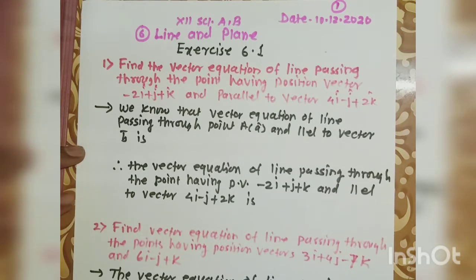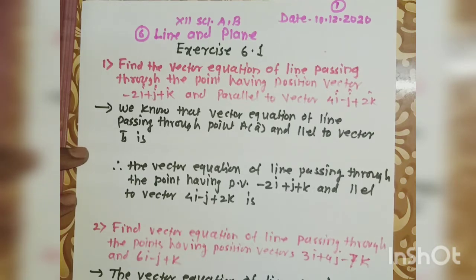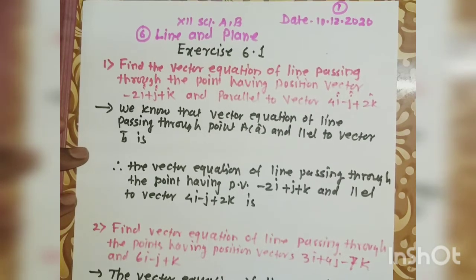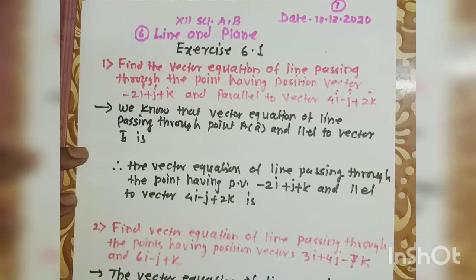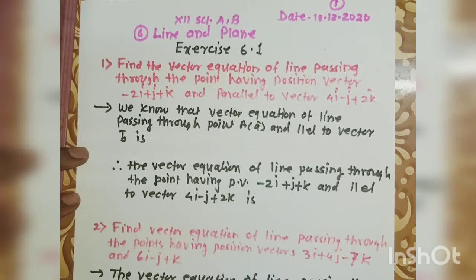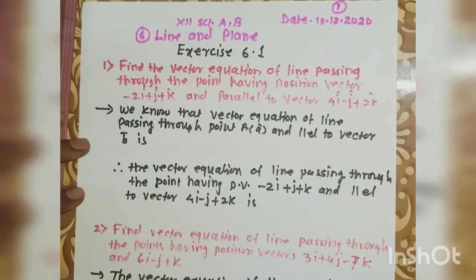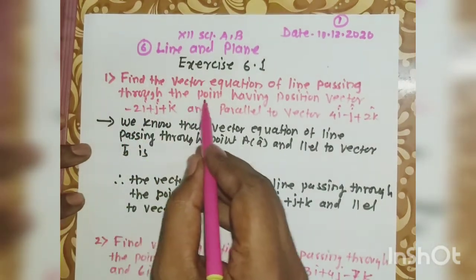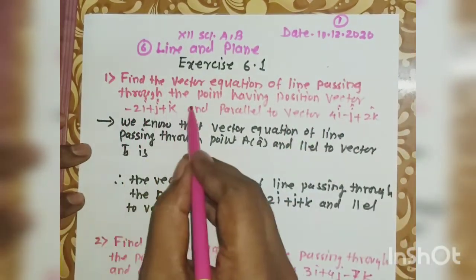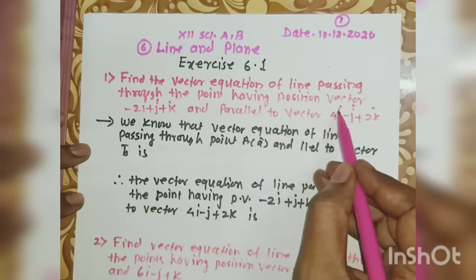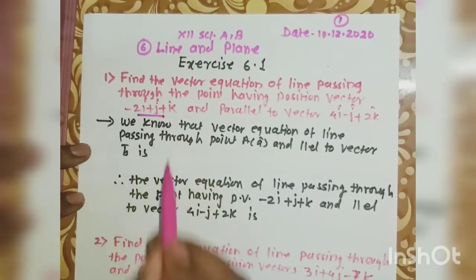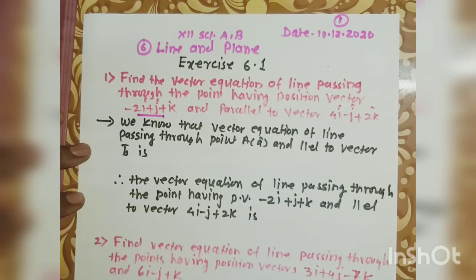The first type is the equation of a line passing through one point and parallel to one vector. In exercise 6.1, the first example is: find the vector equation of a line passing through a point having position vector 2i plus j plus k and parallel to vector 4i minus j plus 2k.